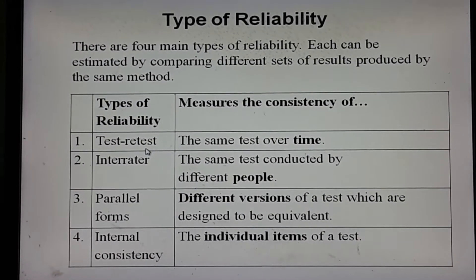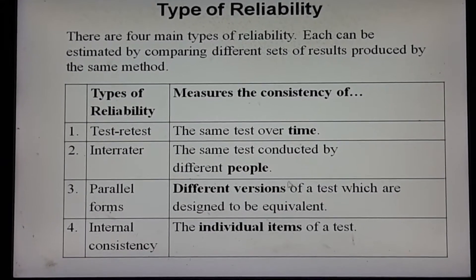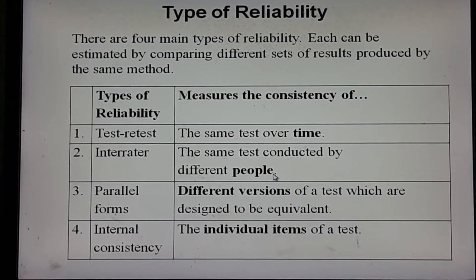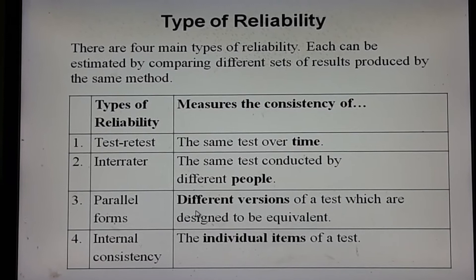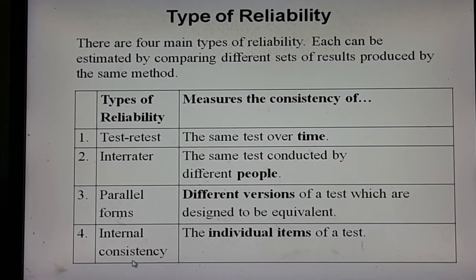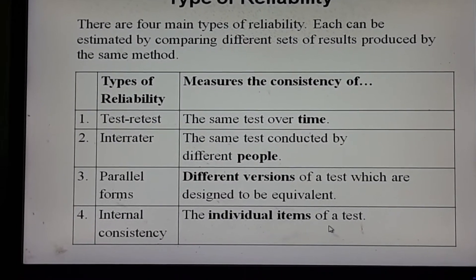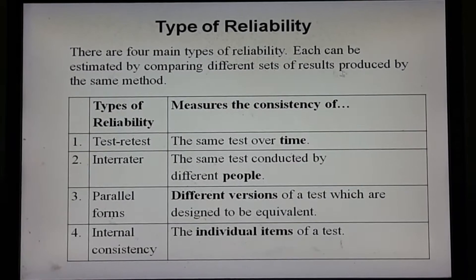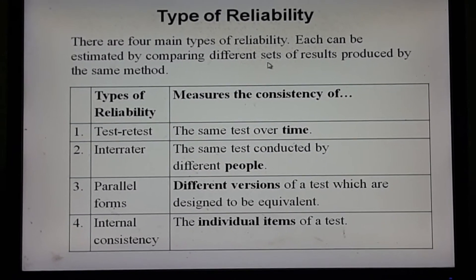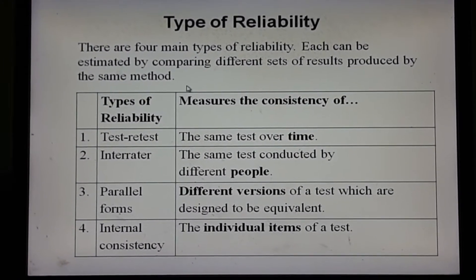There are four types of reliability: test-retest, which means the same test over time; inter-rater, which means the same test conducted by different people; parallel forms, which means different versions of a test designed to be equivalent and consistent; and internal consistency, which means the individual items of a test. Each of these reliability types can be estimated by comparing different sets of results produced by the same method.